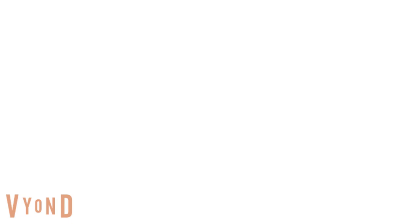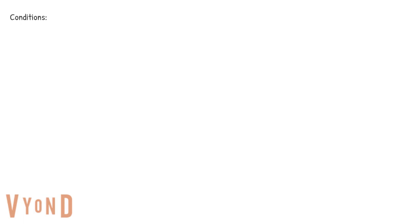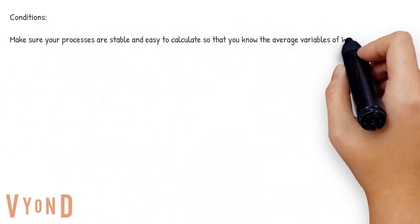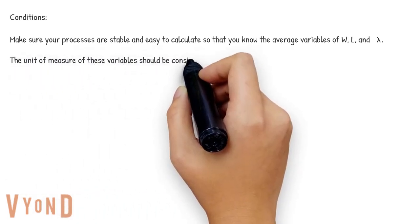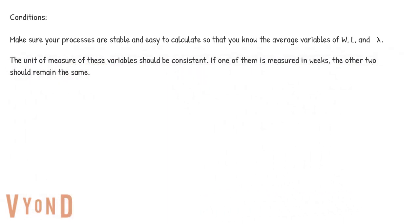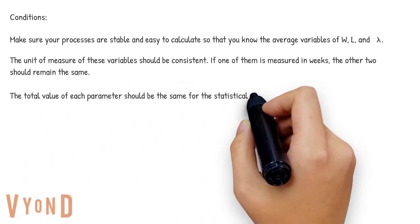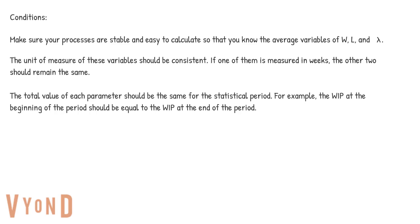Those are perfect examples. We may run into some practical problems when applying Little's Law formula. Here are the conditions you may need to meet to make your process or workflow predictable and applicable to Little's Law formula. Make sure your processes are stable and easy to calculate so that you know the average variables of W, L, and lambda. The unit of measure of these variables should be consistent. If one of them is measured in weeks, the other two should remain the same. The total value of each parameter should be the same for the statistical period. For example, the WIP at the beginning of the period should be equal to the WIP at the end of the period.